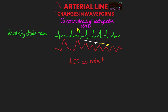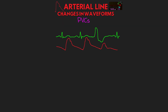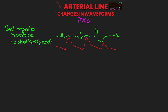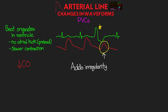For premature ventricular contractions or PVCs, we need to think about what is happening. We have a beat that's originated in the ventricle, meaning no atrial kick to aid preload, as well as an often slower propagation of the depolarization — meaning a slower contraction. Together, these lead to a reduction in cardiac output, manifested by reduced pressure tracings. In the example here, you can see the PVC and corresponding waveform has a markedly reduced systolic upstroke, as well as adding some irregularity to the rhythm.